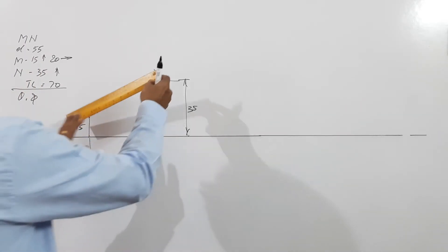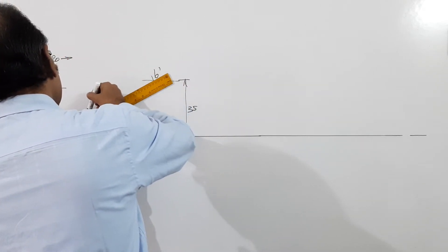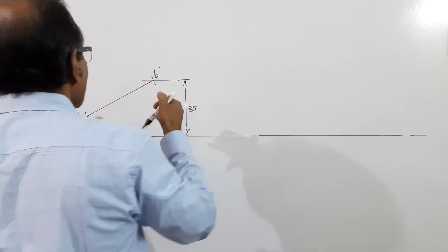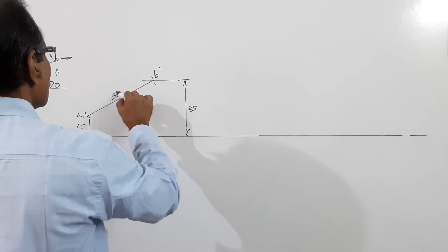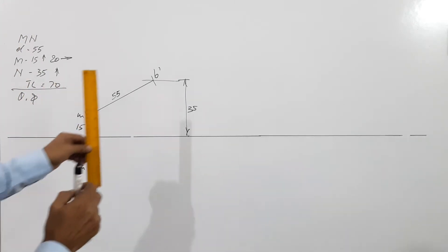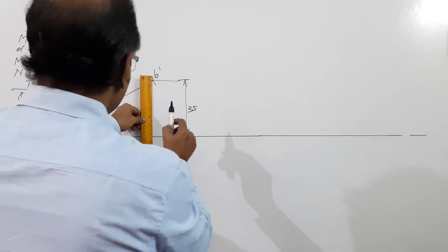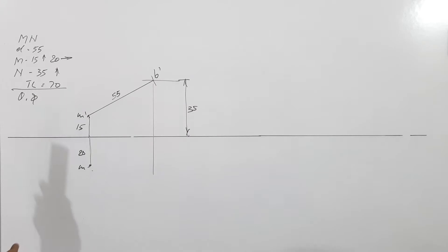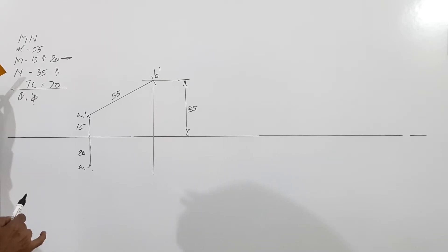M dash B dash is the elevation of the line — that is the given elevation of the line. This distance is 55, the elevation length given in the question. On this projector you have got the plan of M dash B dash, that is somewhere below — we don't know where it is yet. So this information you have used.